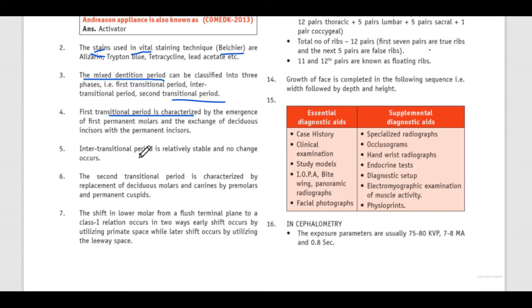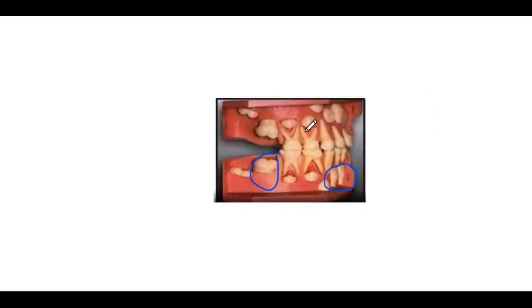The intertransitional period is relatively stable and no change occurs. The second transitional period is characterized by replacement of deciduous molars and canines by premolars and permanent cuspids. Let's have a look — these are the molars and canine, and these are the premolars and permanent canine.